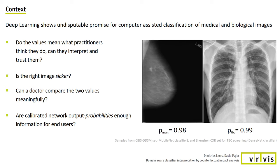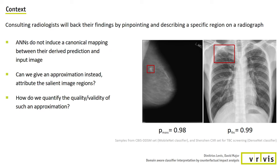What are we addressing? For all the progress and promise enabled by deep learning based computer assisted classification of medical images, some key questions still linger. In a typical setup, we input some images into a network that returns a response with probability-like values. But can practitioners interpret them correctly and trust them? Are even well-calibrated network output probabilities enough information for end users? In practice, consulting radiologists pinpoint and describe specific regions on a radiograph to back their findings, thereby providing a comprehensible interpretation of their work.